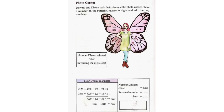Number Dweny chose: 4,002. Reversed number: 2,004. Sum is equal to 6,006. That is: 4,002 = 4,000 + 2. 2,004 = 2,000 + 4. Total: 6,000 + 6 = 6,006.